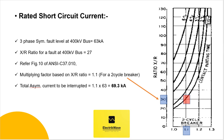Referring to figure 10 of ANSI C37.010, three-phase and line-to-ground fault multiplying factors include the effects of DC decrement only. The multiplying factor based on X by R ratio is 1.1 for a two-cycle breaker, as shown in the figure. So the total asymmetrical current to be interrupted would be 1.1 multiplied by 63, which equals 69.3 kA.